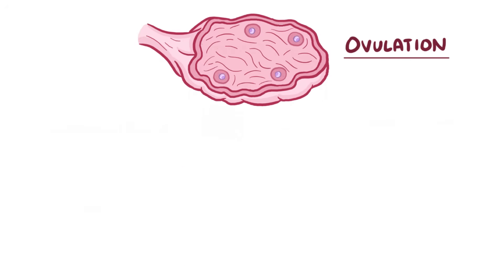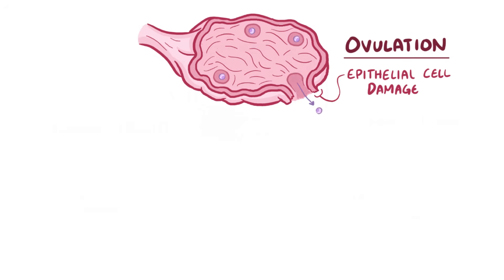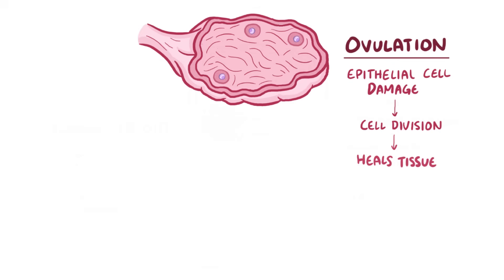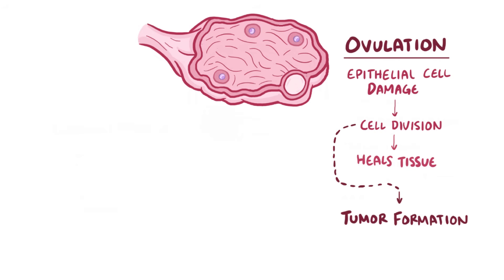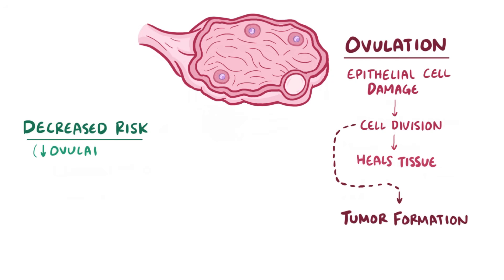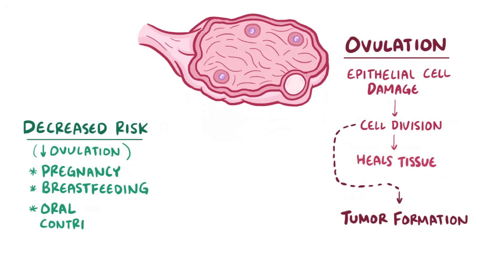During ovulation, the follicle ruptures and releases an egg, which inadvertently leads to epithelial cell damage. To fix that damage, the epithelial cells have to undergo cell division to replace and heal the tissue. Each time cells divide, there's a chance of a mutation and the possibility of tumor formation, and this means that with more ovulatory cycles, there's an increased risk of tumor formation. So things associated with a decreased risk of ovarian cancer include things that reduce the number of ovulatory cycles, like pregnancy, breastfeeding, and oral contraceptive use.